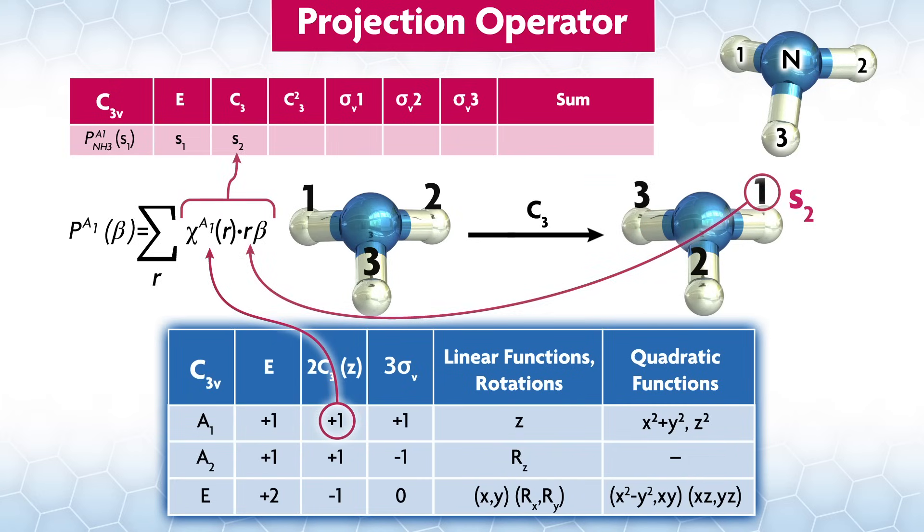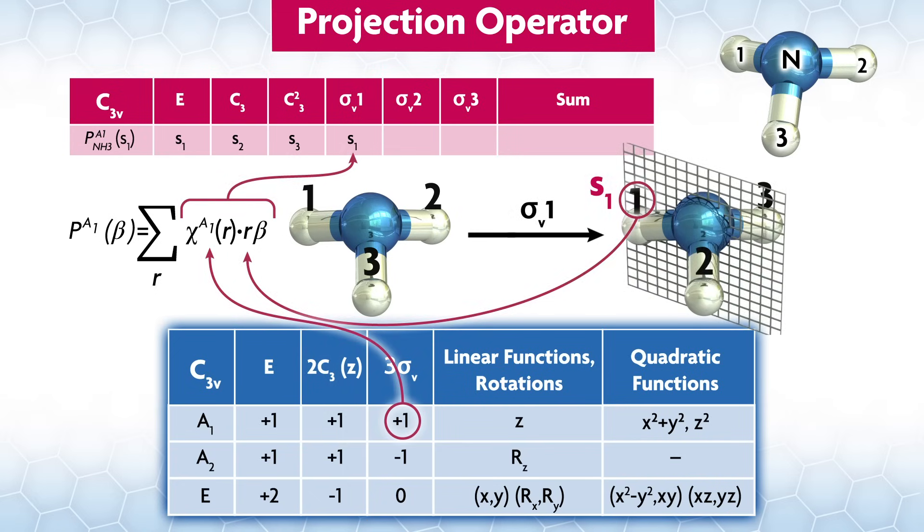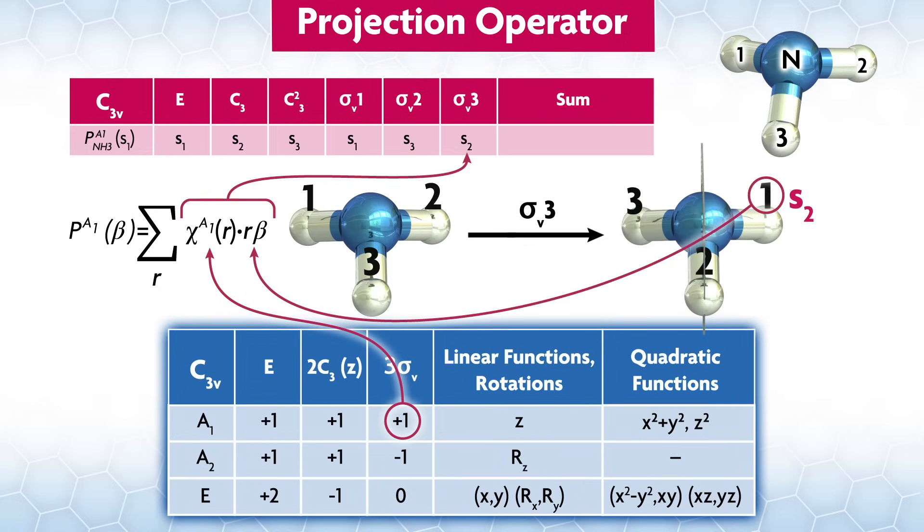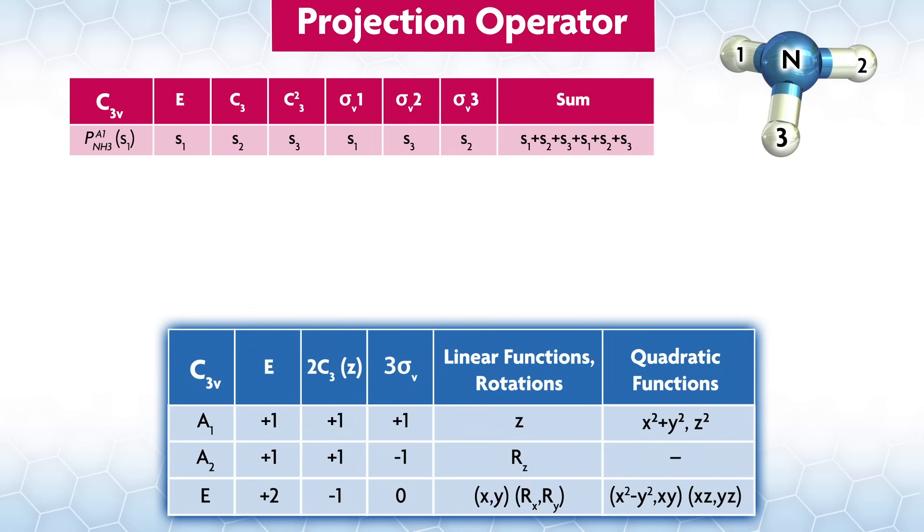For a c3, s1 will go to s2. For c23, s1 will go to s3. We need to do the three different planes of symmetry, which we will call sigma v1 through 3, depending on which bond they're along. Our basis is in the same plane as sigma v1, so nothing happens, and we write s1. If we do operation sigma v2, s1 goes to the s3 position. With the final mirror plane, s1 goes to s2. Summing the cells gives this.